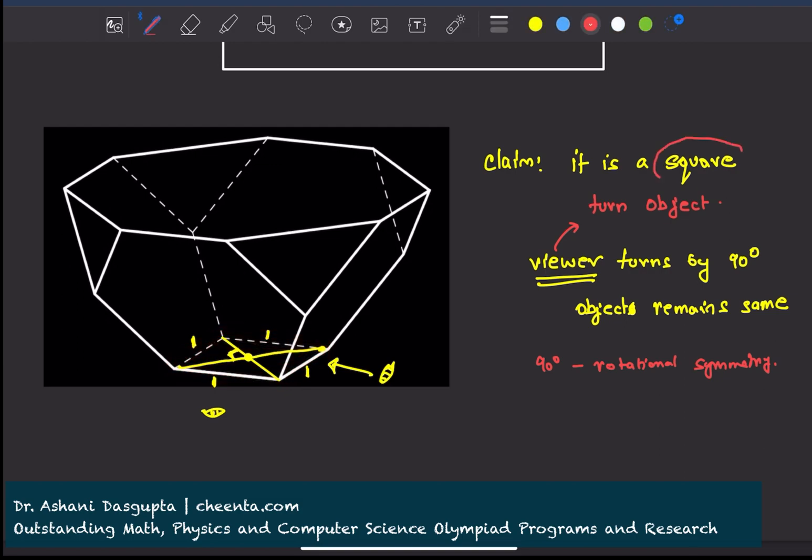This is, in fact, a square, because rhombus does not have 90 degree symmetry, which square does.